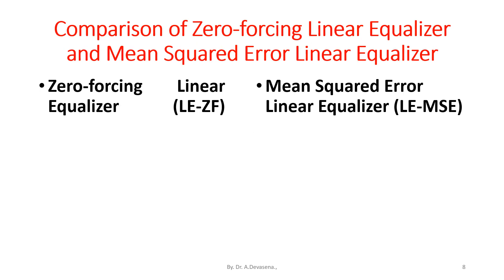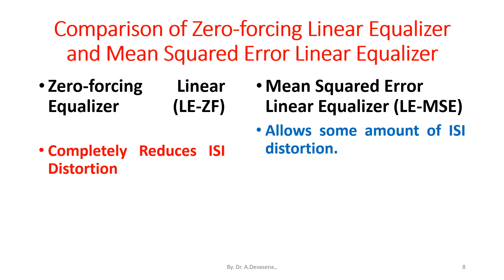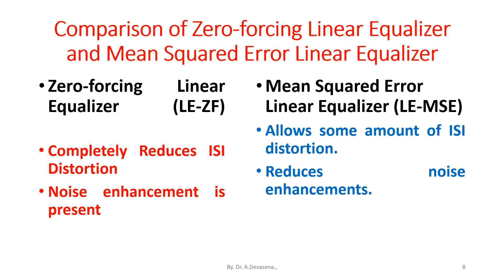Here is a comparison of the two algorithms. The zero-forcing linear equalizer completely reduces inter-symbol interference, i.e. ISI distortion. However, noise enhancement is present in the zero-forcing linear equalizer. The mean squared error linear equalizer allows some amount of ISI distortion, but it reduces noise enhancement.